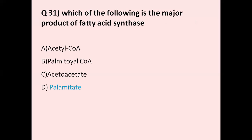Question number 31: Which of the following is the major product of fatty acid synthesis? Option A acetyl coenzyme A, option B palmitoyl coenzyme A, option C acetoacetate, option D palmitate. The correct answer is palmitate. Palmitate is the primary product of fatty acid synthesis. Acetyl coenzyme A plays a role in the citric acid cycle and palmitoyl coenzyme A is in fatty acid synthesis, but the major product is palmitate.